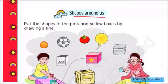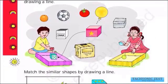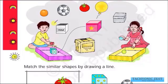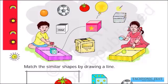Now we will look at different types of shapes and understand the similarities between them. This orange is circular, this football is circular, this tomato is also circular, and this balloon is also circular. This box is rectangular in shape and this other box is also rectangular. We need to match similar shapes by placing them in the correct box.